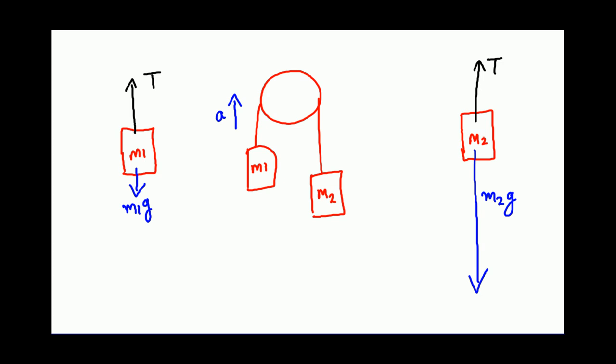For mass M1, net force equals M1a. So you can easily write the right side, M1a. Some students are confused. What should I put? M1a, M2a, or M1 plus M2a? It is M1a. What is on the left? What gives you net force of M1a? It is T minus M1g.